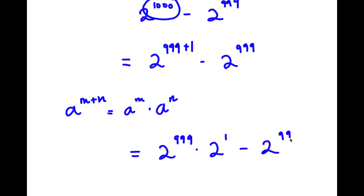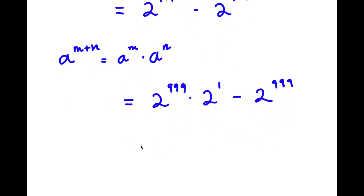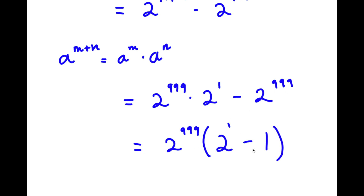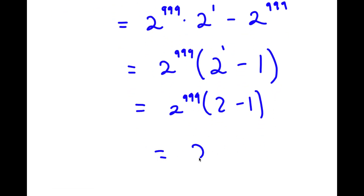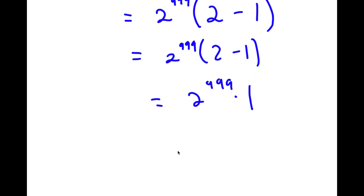Dividing both terms by 2^999: 2^999 · 2^1 divided by 2^999 is 2^1, and 2^999 divided by 2^999 is 1. So I have 2^999 times (2 - 1), which equals 2^999 times 1, which is simply 2^999.